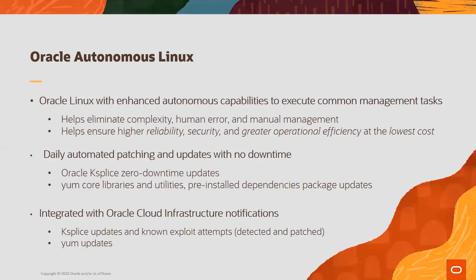Oracle Autonomous Linux is based on the proven Oracle Linux operating environment, which is a high-performance, secure, reliable, and scalable Linux distribution for enterprise workloads. Oracle Linux powers Oracle Cloud and Oracle Engineered Systems, and is used extensively by tens of thousands of customers globally, and is certified to run software from thousands of ISVs.